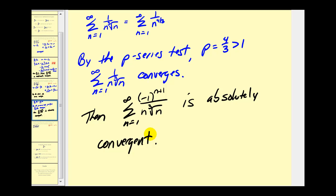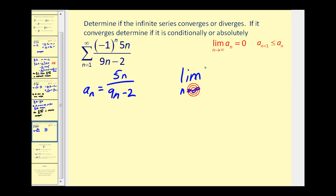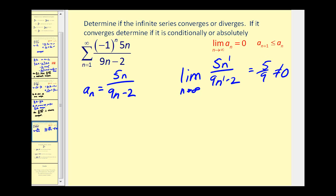Let's look at one more. We'll start by applying the alternating series test, where a sub n is going to equal five n divided by nine n minus two. Taking the limit of a sub n as n approaches infinity, because the degree of the numerator and denominator are the same, this limit is equal to the ratio of the leading coefficients, or five ninths. So this alternating series fails the nth term divergence test and therefore is divergent.